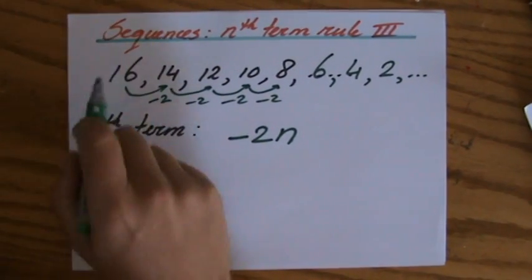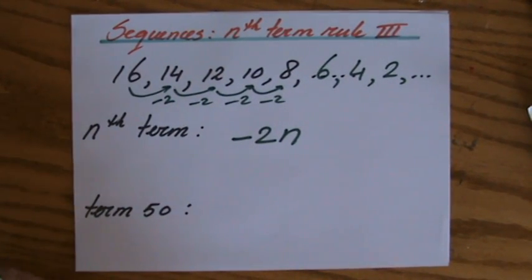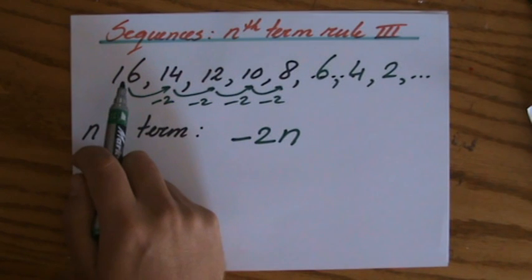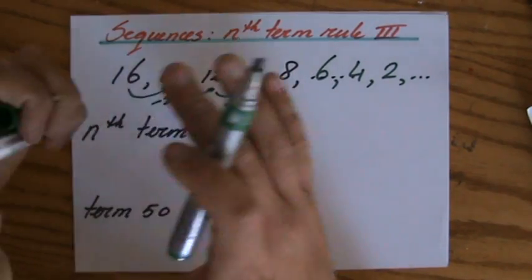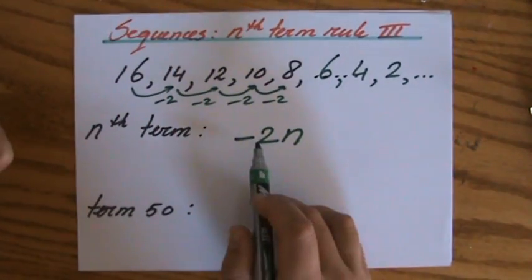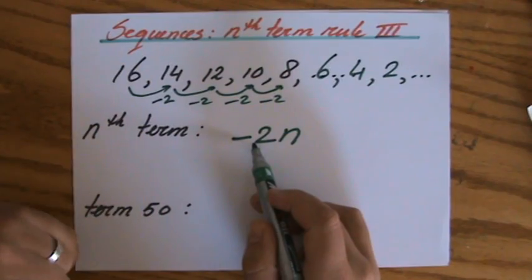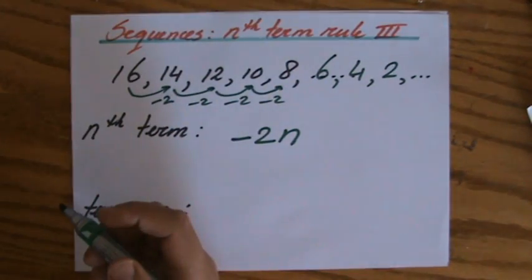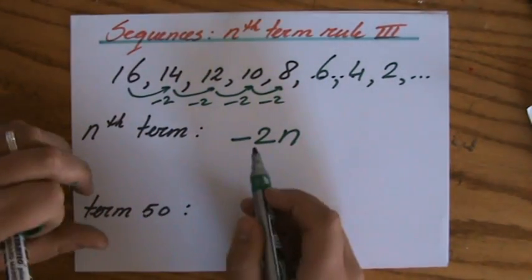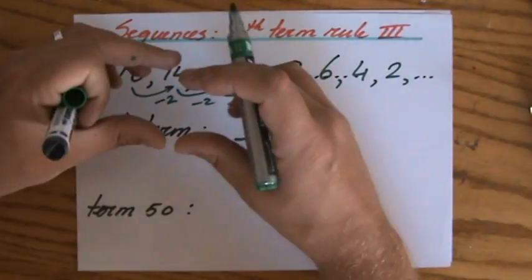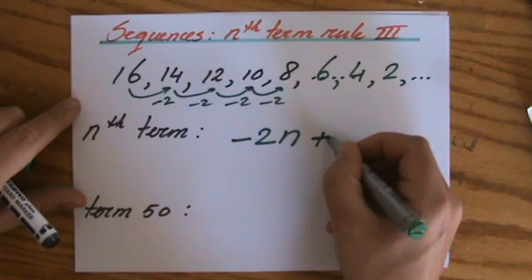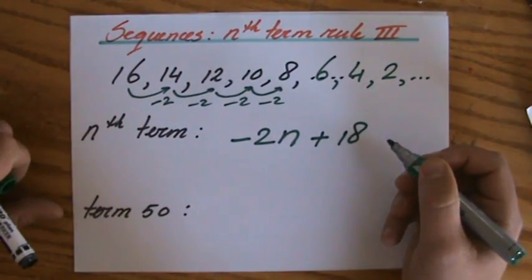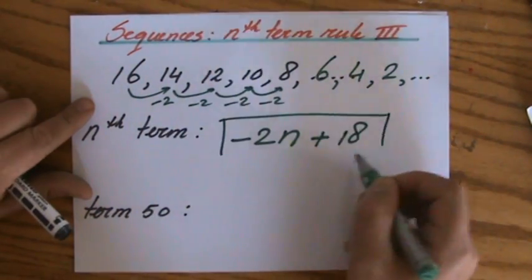I have to check my first term. Is it minus 2? No, it's 16. No worries. What do I have to add or subtract to go from minus 2 to 16? I picture that number line from minus 2 to 16 — I have to add 18. And that gives me my nth term rule: minus 2n plus 18.